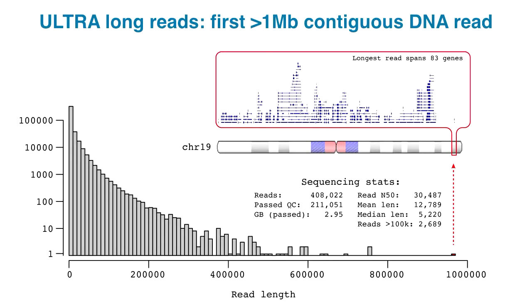If you have very long reads, you can basically span across those repetitive regions and stitch together the segments of a chromosome much more accurately. We were the first to generate a megabase-long bit of DNA a few months ago, and just this weekend our record was shattered — the new record is 1.3 million bases. One million bases of DNA is about 2% of one of the smaller chromosomes of the human genome. That record-breaking DNA read spans across 83 genes and any repeats in between, giving you a really macro view of the human genome.